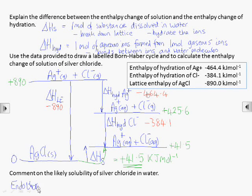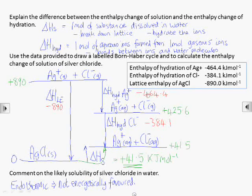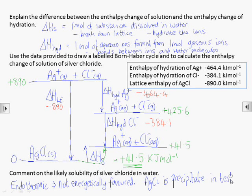If the enthalpy change of solution is positive, that is endothermic, we can say that dissolving is not energetically favorable. And we know from our test for halide ions that when we add silver ions, the silver chloride precipitate that forms is insoluble.